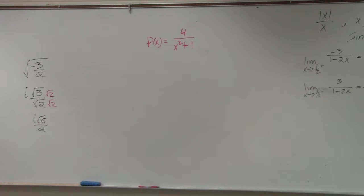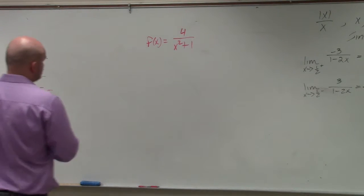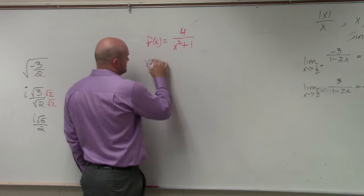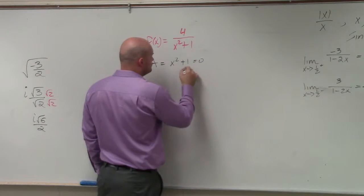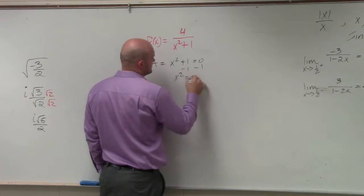Set the denominator equal to 0 and solve. So for vertical asymptotes, x squared plus 1 equals 0, x squared equals negative 1.